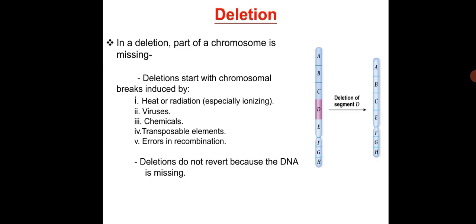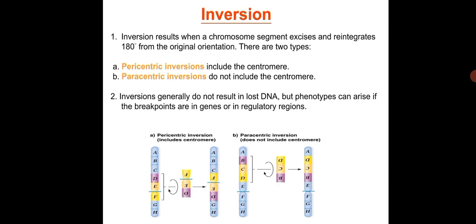Deletion is the form of mutation in which part of a chromosomal segment is missing. It starts with chromosomal breaks induced by heat, radiation, viruses, chemicals, or transpositional errors. The lesions do not revert because part of the DNA is missing.